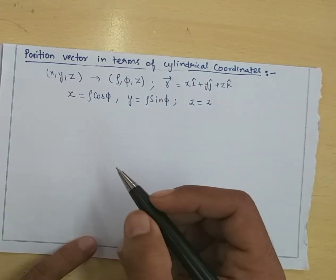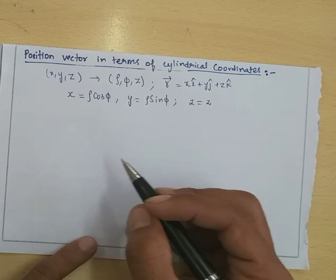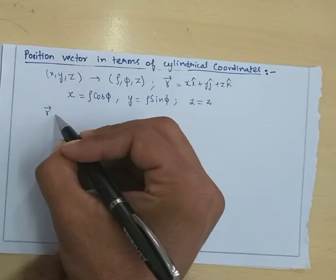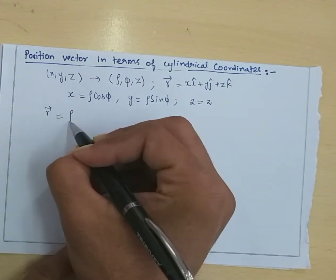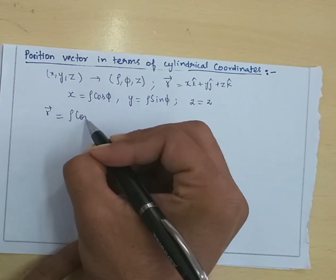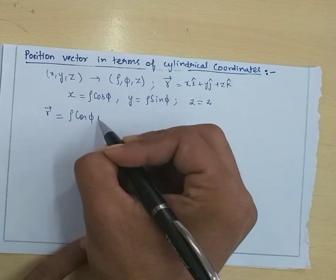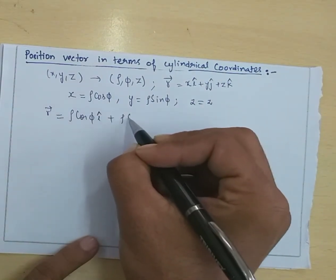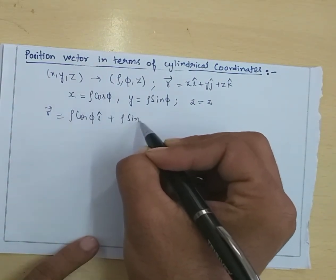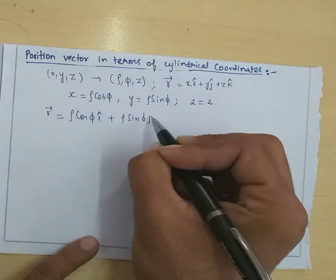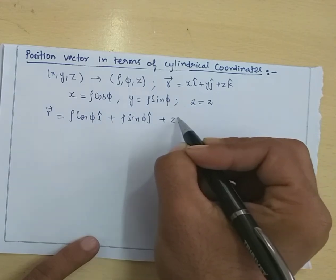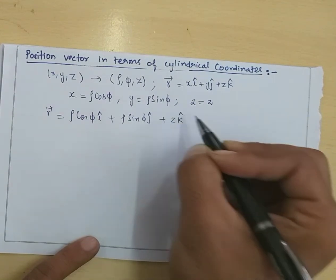So in terms of cylindrical coordinates, the position vector can be written as: R = Rho·cos(Phi)·i-cap plus Rho·sin(Phi)·j-cap plus Z·k-cap.